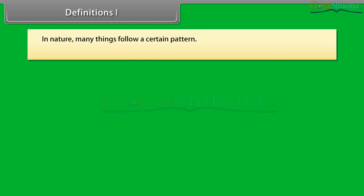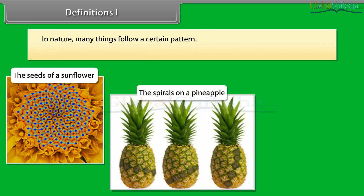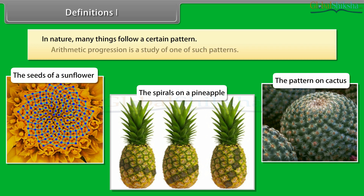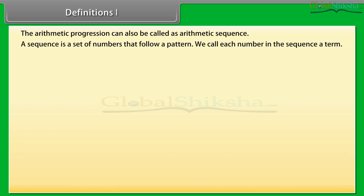In nature many things follow a certain pattern, such as the seeds of a sunflower, the spirals on a pineapple, the pattern on a cactus, and so on. Arithmetic progression is a study of one of such patterns. It can also be called an arithmetic sequence. A sequence is a set of numbers that follow a pattern — we call each number in the sequence a term.